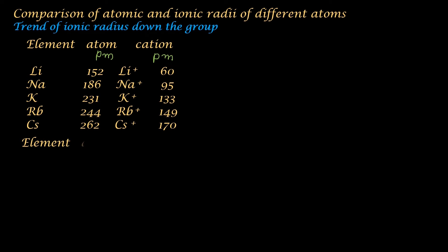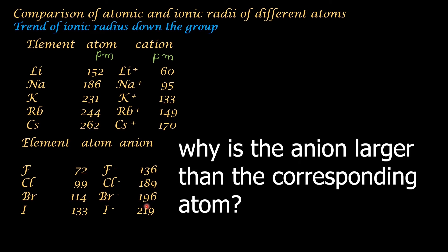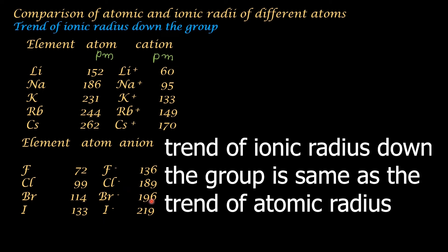Now let us see the trend of anion size down the group, considering Group 17, the halogens. Fluorine atom 72 pm, fluorine ion 136 pm; chlorine atom 99 pm, chlorine ion 189 pm; bromine atom 114 pm, bromine ion 196 pm; iodine atom 133 pm, iodine ion 219 pm. The size of the anion is greater than the corresponding atom because nuclear charge remains the same but the number of electrons increases, so electronic repulsion overweighs nuclear attraction. Anion size also increases down the group because the number of shells increases.